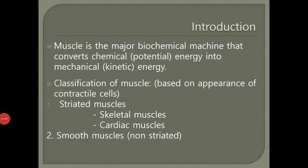Good afternoon students. Today I'll be dealing with a topic called muscle proteins. The muscle is the major biochemical machine which converts potential energy into kinetic energy — the chemical energy that helps us move as mechanical energy. Muscles are classified mainly into two types: striated muscles and smooth muscles (non-striated). Under striated muscles we have skeletal muscles and cardiac muscles.